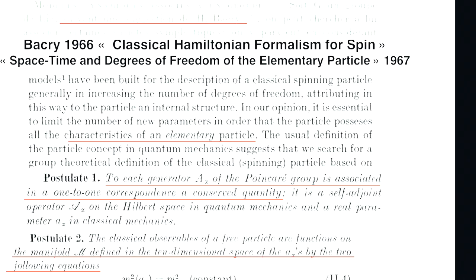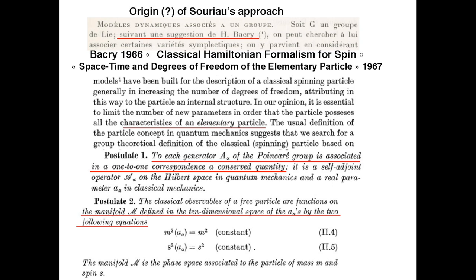What Bacri does is not exactly what Souriau was doing, but he's in a realm of ideas that at least suggested this to Souriau — because he wants to talk about the basic characteristics of an elementary particle, saying the essential is to have the Poincaré group as symmetry, that to each generator there is a conserved quantity, and then he wants the algebra of the conserved quantities, defining the ten-dimensional space of these quantities. What he is doing is not very far from what Souriau created later.